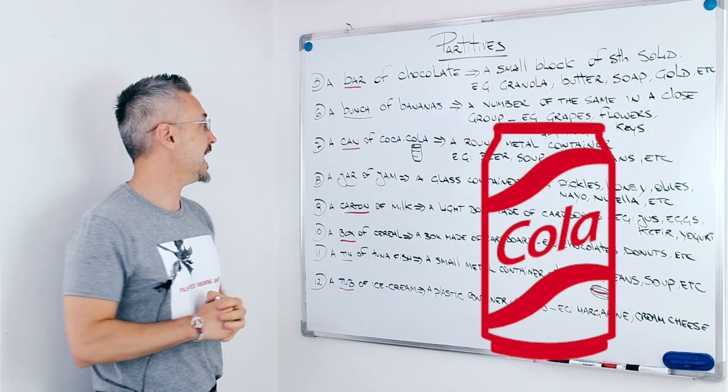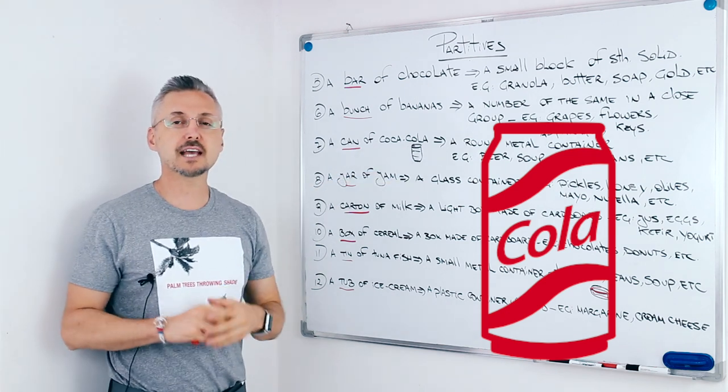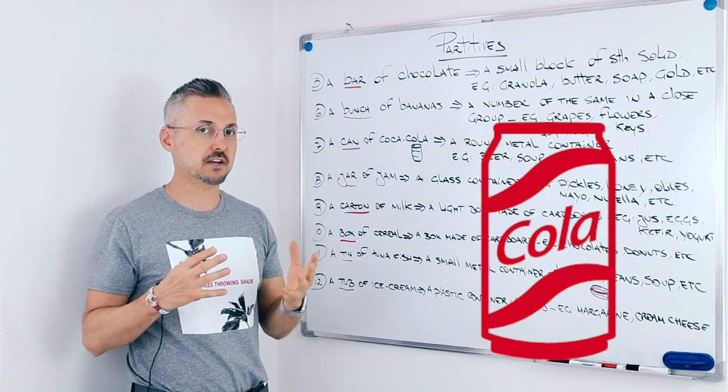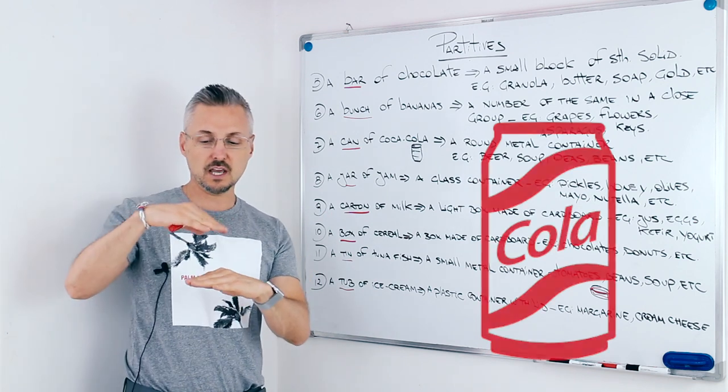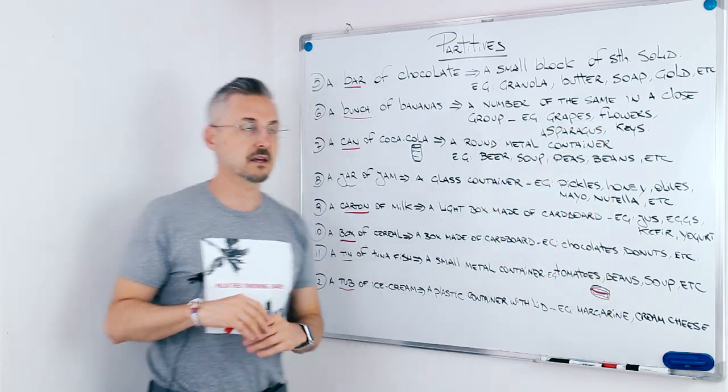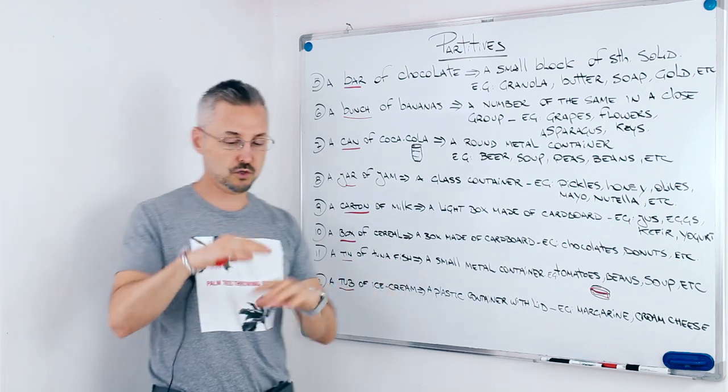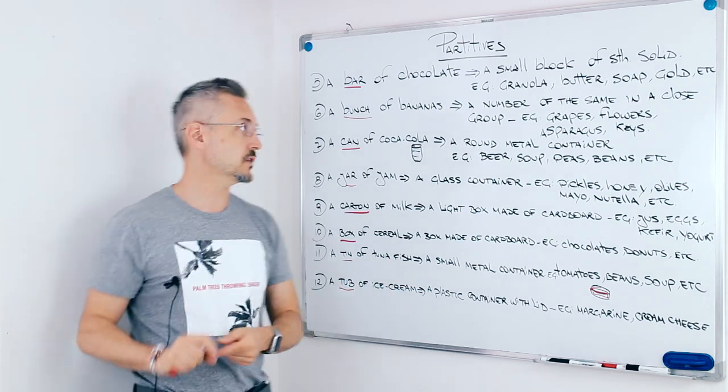The next one was a can. A can of Coca-Cola. This is a round metal container, and it's usually higher than a tin, which is a tin of tuna. The tin of tuna is flat.